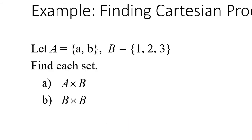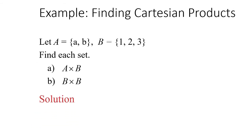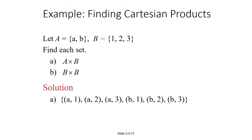Let's try an example where we're given two sets and have to find Cartesian products. For part A, we're going to find A cross B. To do this, we start with all of the ordered pairs that have A as the first component. So we've matched A with 1, A with 2, and A with 3.